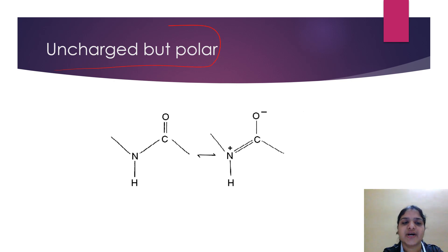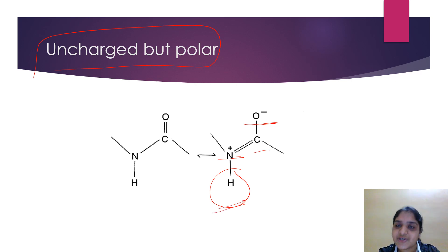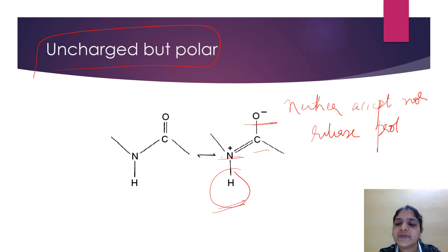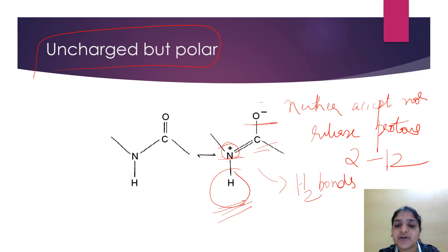The fourth characteristic: peptide bonds are uncharged but polar. The peptide bonds contain polar hydrogen atoms of the amino group with a partial positive charge, and polar oxygen atoms of the carbonyl group with a partial negative charge. Like all amide linkages, the C=O and N-H groups neither accept nor release protons over the pH range of 2 to 12. The C=O and N-H bonds are polar and are involved in the formation of hydrogen bonds.